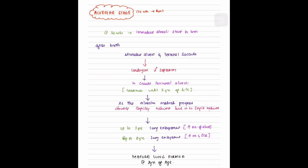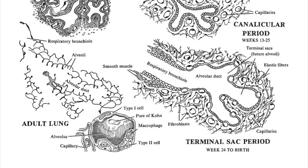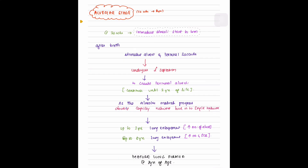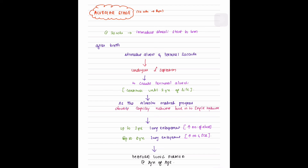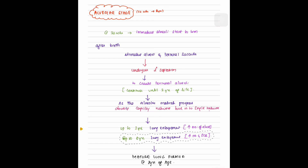The final stage is the alveolar stage, which lasts from 32 weeks to 8 years post birth. At 32 weeks, immature alveoli start to form. After birth, immature alveoli and terminal saccules undergo secondary separation to create terminal alveoli, which continues until three years of life. As alveolar maturation progresses, the double capillary network fuses into a single network. Up to three years, lung enlargement is due to increased number of alveoli; up to eight years, it is due to increased number and size of alveoli. The mature lung is formed at eight years of age.